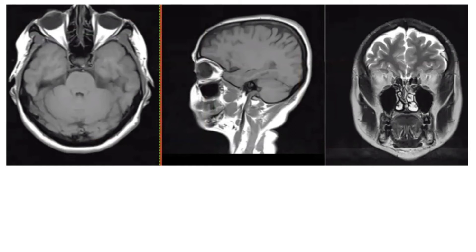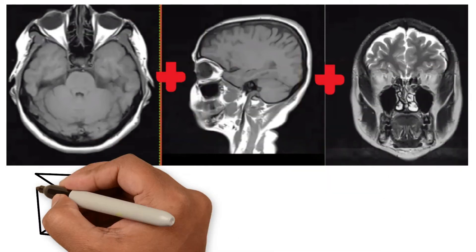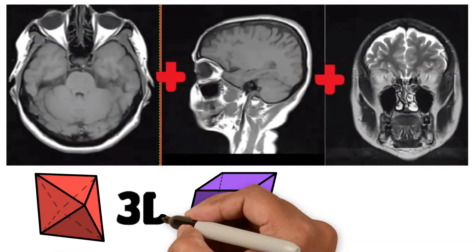As you can see, by joining the three planes - axial, sagittal and coronal - which have only two dimensions, we get a three-dimensional image.